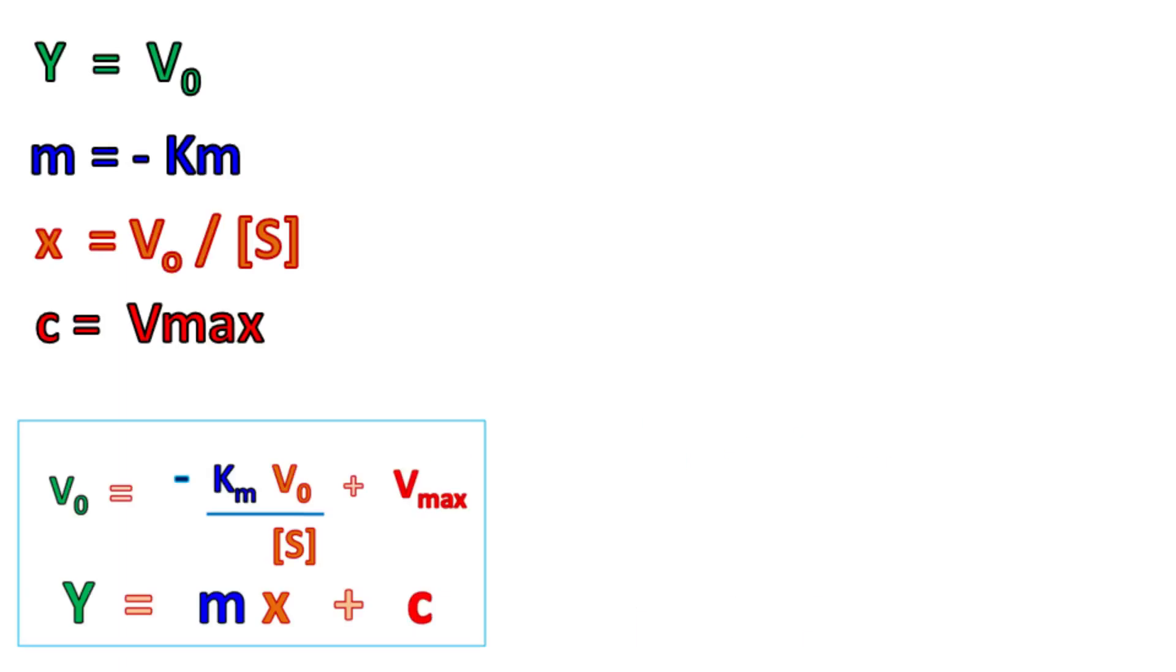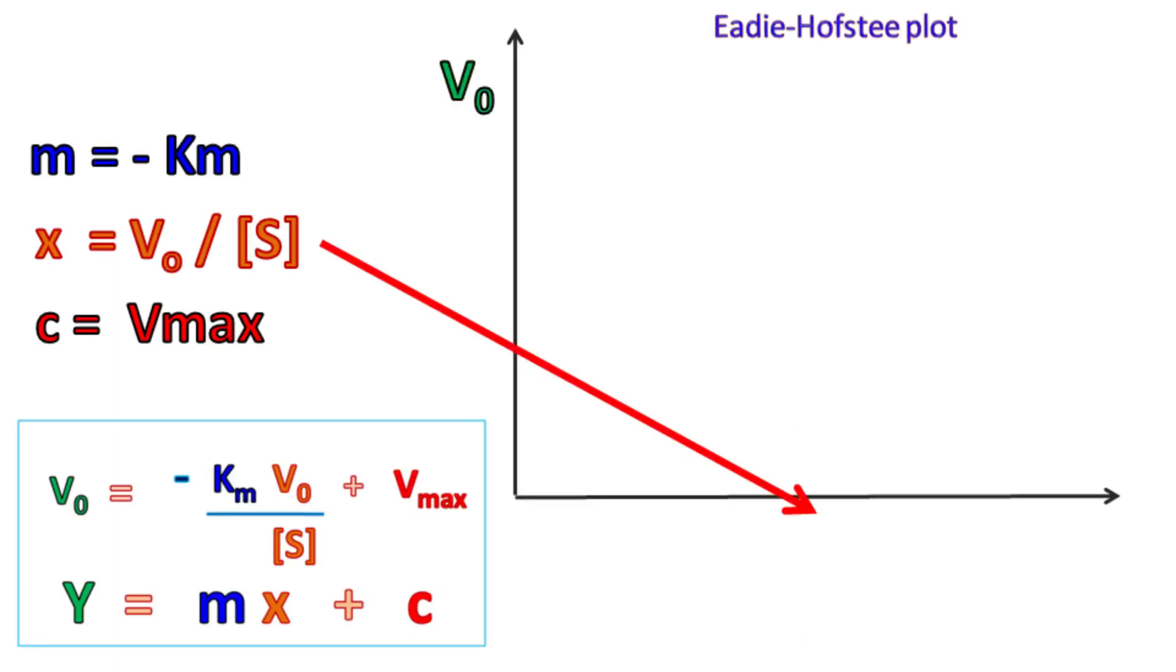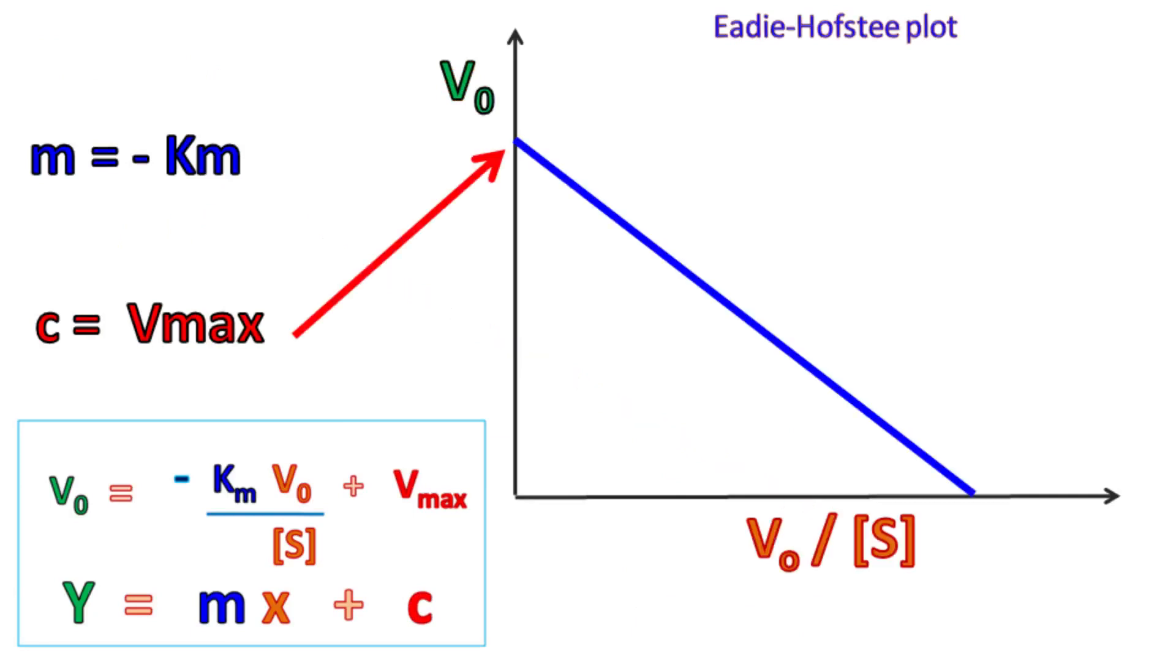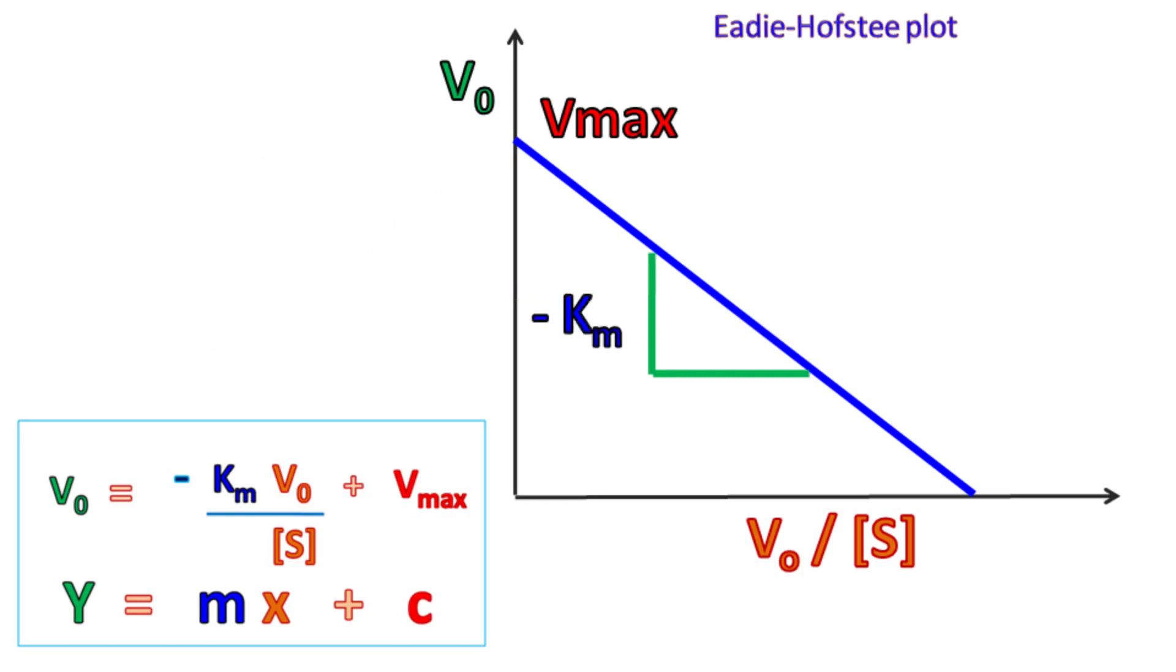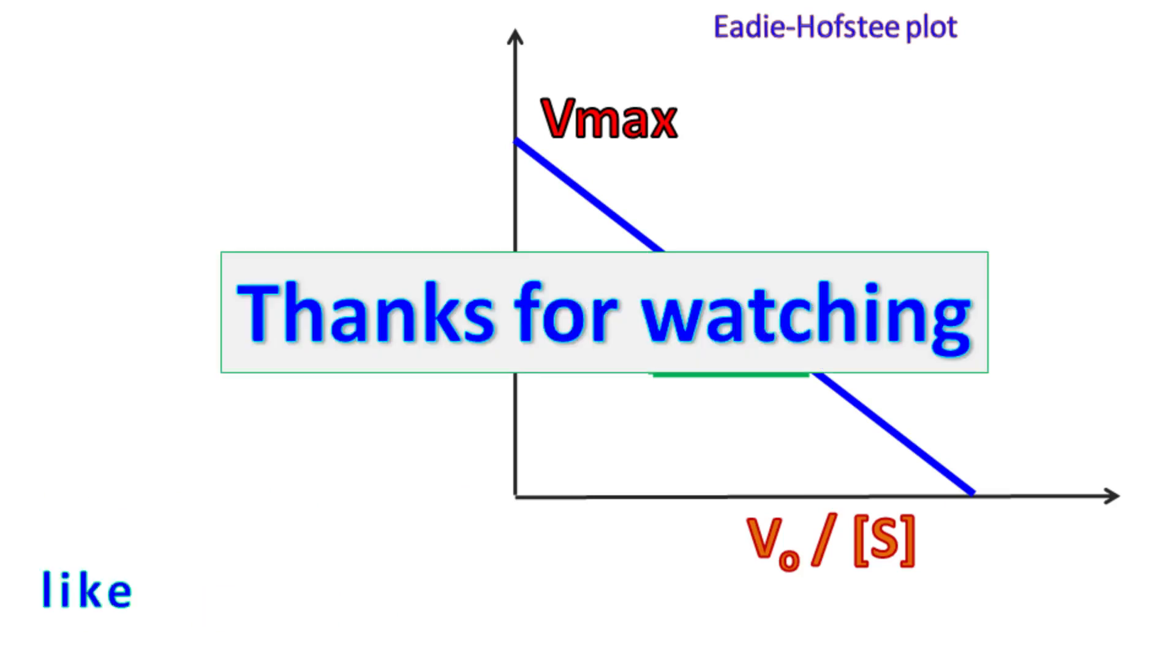Here, y equals V0, x equals V0 by S, the intercept on y-axis is Vmax, and the slope of the graph is minus Km.